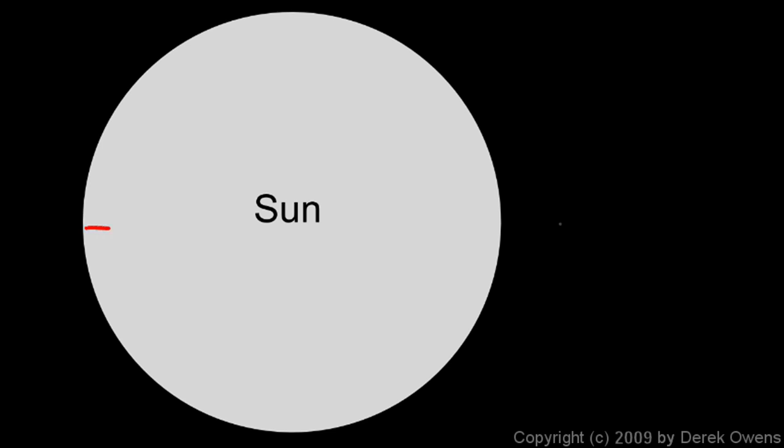The diameter of the Sun, from one side to the other, is about 109 times the diameter of the Earth. What that means is that the volume of the Sun, the volume is going to be about 109 cubed times the volume of the Earth. And 109 times 109 times 109 comes out to about 1.3 million times the volume of the Earth.